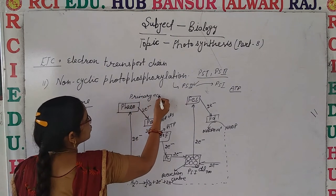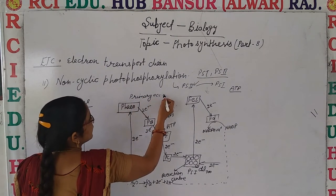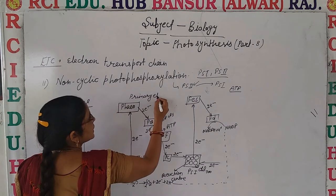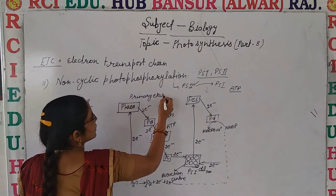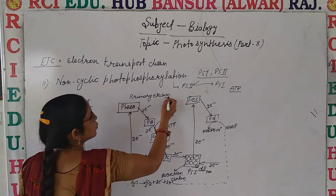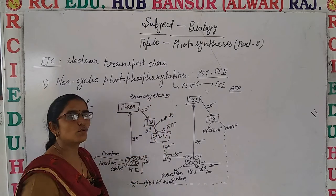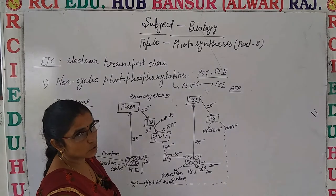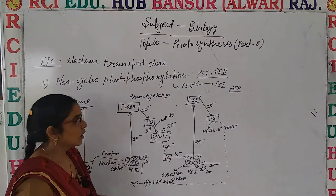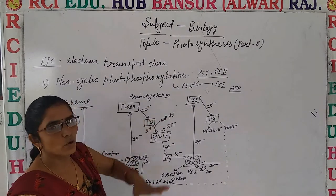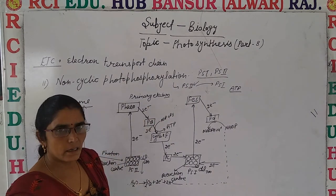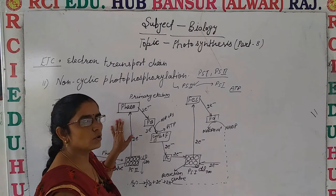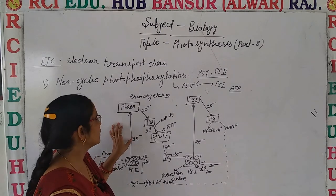As an exam tip: if asked about the primary electron acceptor in cyclic vs non-cyclic photophosphorylation — in cyclic photophosphorylation it is iron-sulfur protein, and in non-cyclic photophosphorylation it is pheophytin.